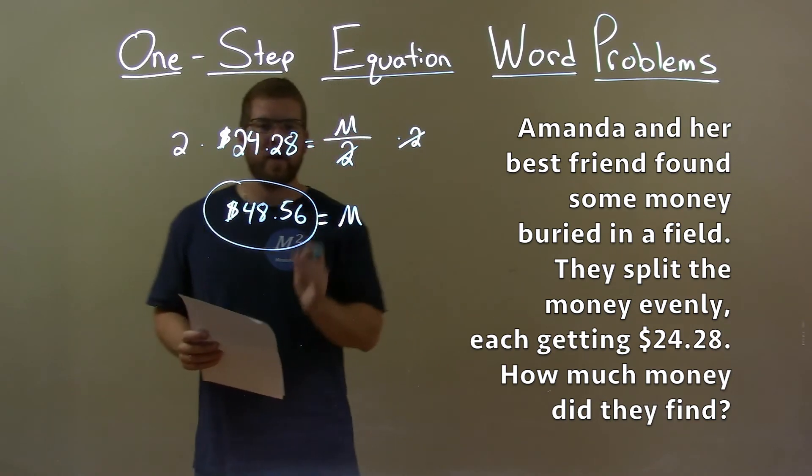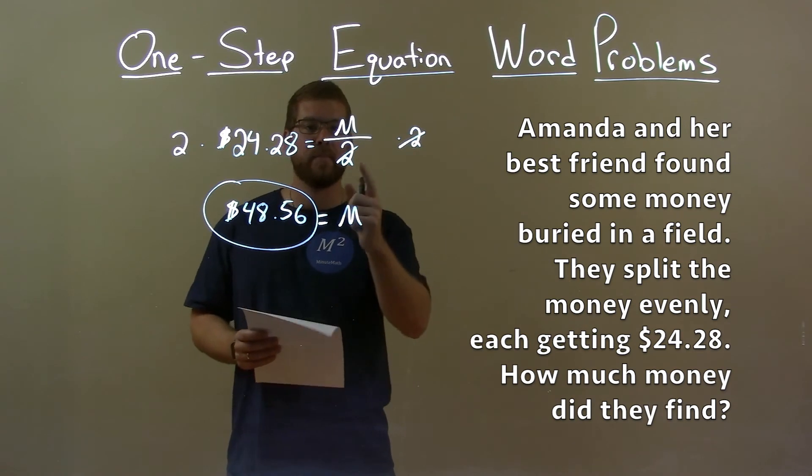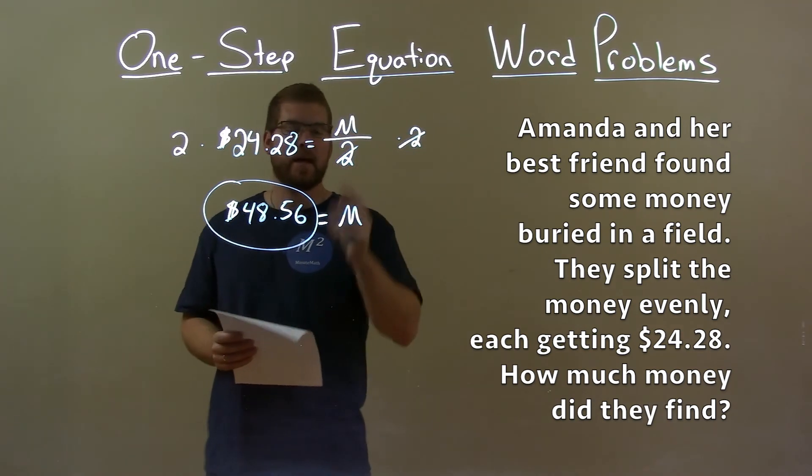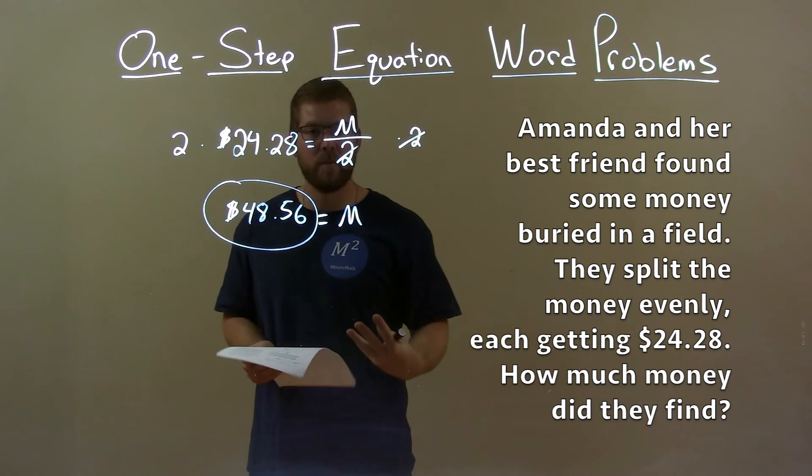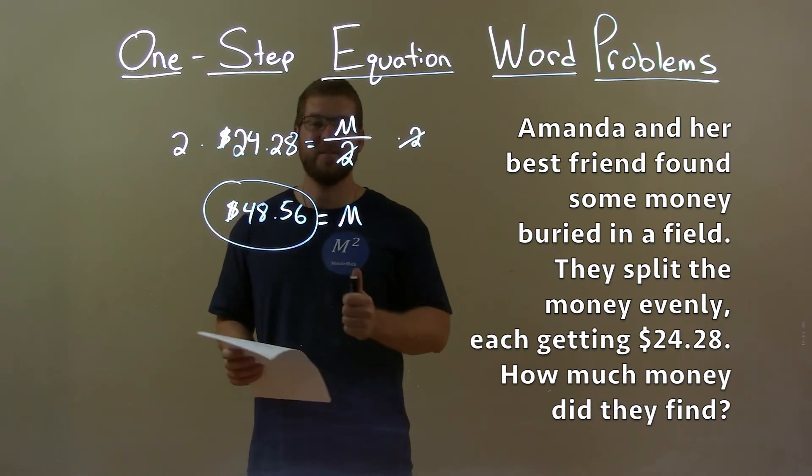So with that information, we set up an equation. Then we solve for missing variable M. Multiply both sides by 2 to get M by itself equal to our final answer, the total amount of money buried in the field, $48.56.